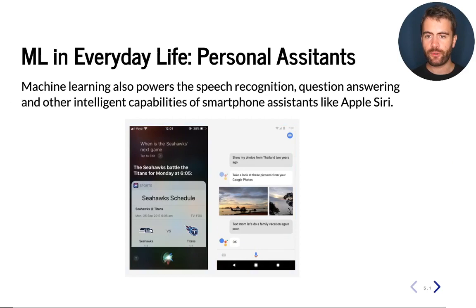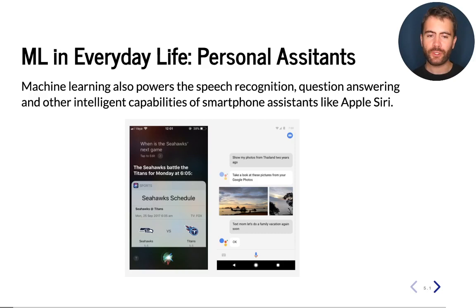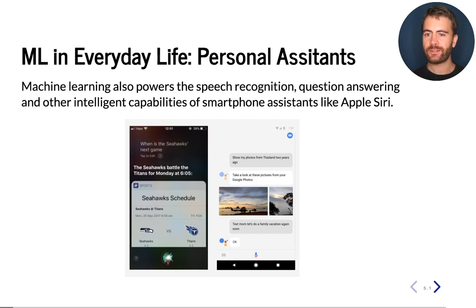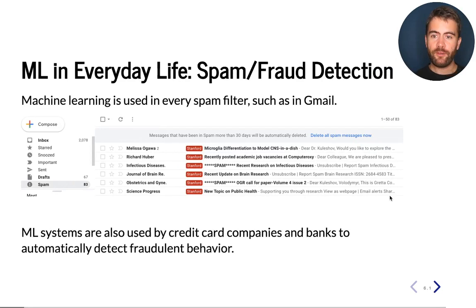If you have a smartphone with you, then again you are almost certainly using machine learning. Many features of your smartphone rely on this technology. One particular feature I want to highlight is the personal assistant capability, for example Apple Siri or Google Assistant. When you speak into these personal assistants, the system uses machine learning to transform your voice into a sequence of words or characters. Then again, it uses machine learning to better understand the meaning of your sentences, and then it uses machine learning to retrieve the information that is relevant to you, for example the photos in this example.